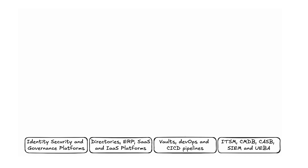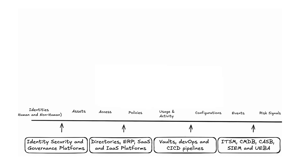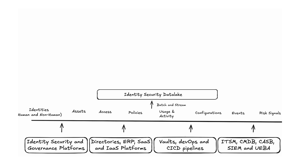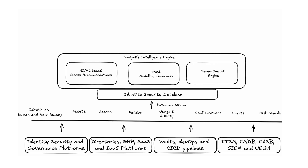What we are collecting is massive data sets in the form of identities — be it human or non-human — as well as information about assets, their access, policies, configuration, and risk signals. These are streamed in batch mode or in real time, and that is fed into our internet-grade, flexible, and enterprise-ready industry-first identity security data lake.